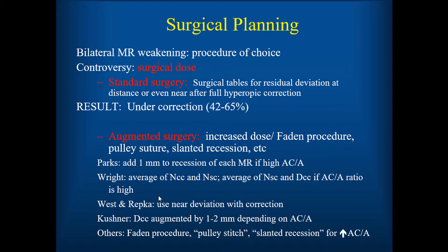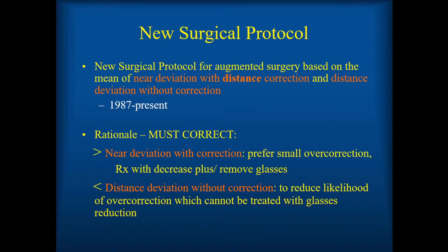Parks added a millimeter to the recession of the medial rectus if there was a high AC/A ratio. Ken Wright averaged the near with correction and the near without correction, or the near without correction and distance with correction if there was a high AC/A ratio. You can see from here other augmentation techniques that have been used over the years. In 1986 or 1987 I became interested in another augmentation protocol, and I've been using that since the late 1980s.